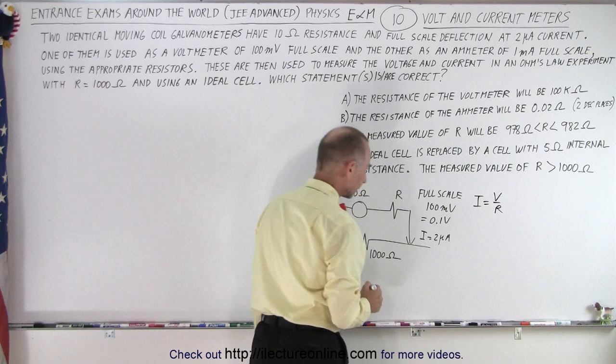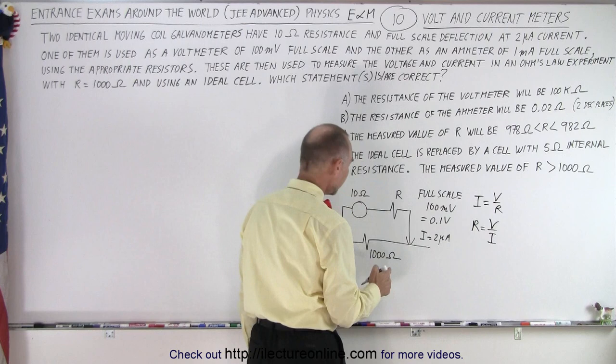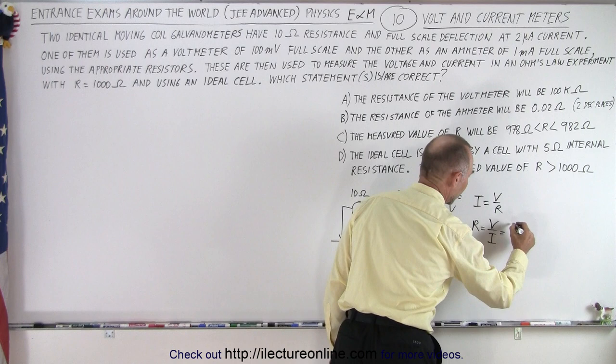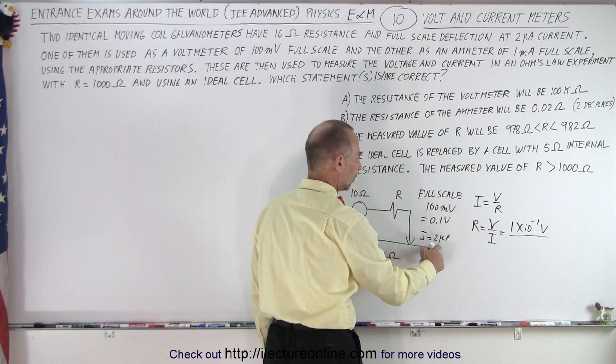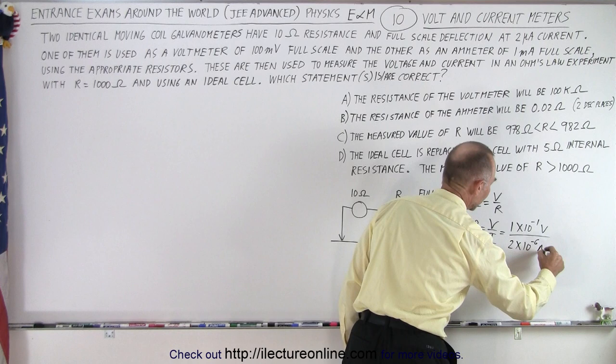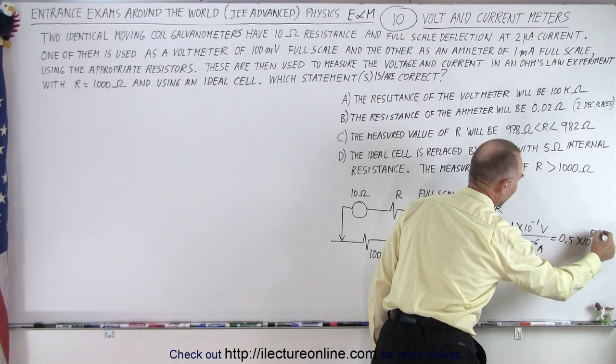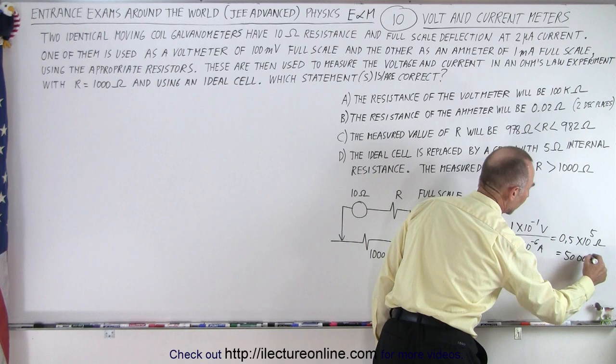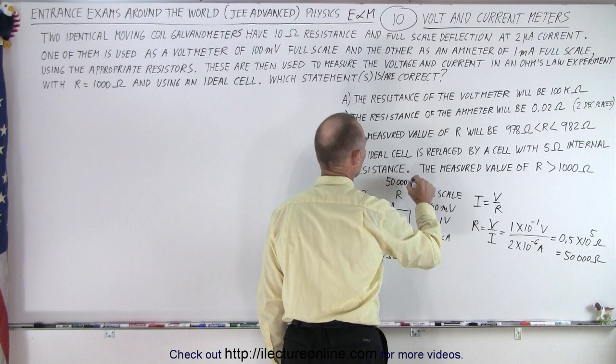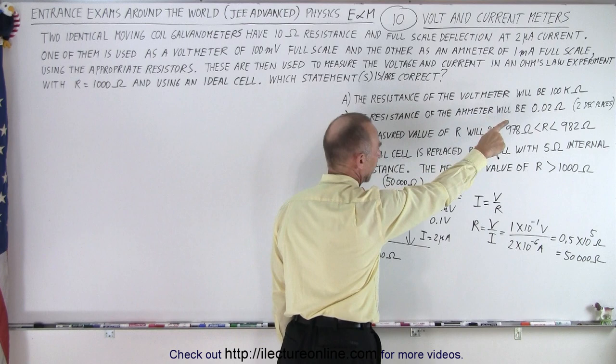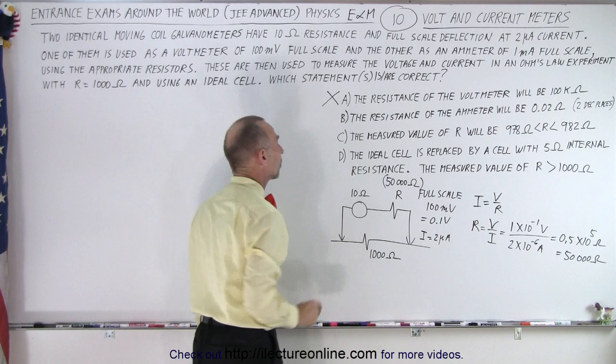So we use Ohm's law, we can say that I is equal to V over R or in this case R is equal to V over I. Now the voltage is the full scale voltage we want of 0.1 volt, so that's 1 times 10 to the minus 1 volt divided by the current which is 2 microamps, which is 2 times 10 to the minus 6 amps. So that would be equal to 0.5 times 10 to the fifth ohms or 5 times 10 to the fourth which is 50,000 ohms. So what they want is they want a resistor of 50,000 ohms. And then if we read part A they say the resistance of the volt meter will be 100,000 ohms, but no we need a 50,000 ohm resistor, that means that A is not correct.